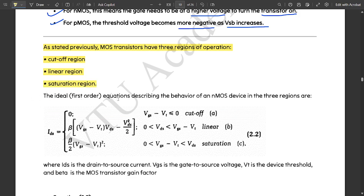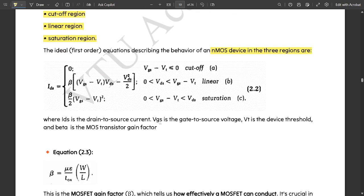The ideal first order equations which describe the behavior of an NMOS device in three regions are given below. These are the three equations for NMOS IDS for three regions: one is for cutoff, one is for linear, and one is for saturation. In case of cutoff region, the condition is VGS minus VT is less than or equal to 0 and the value of IDS is equal to 0.